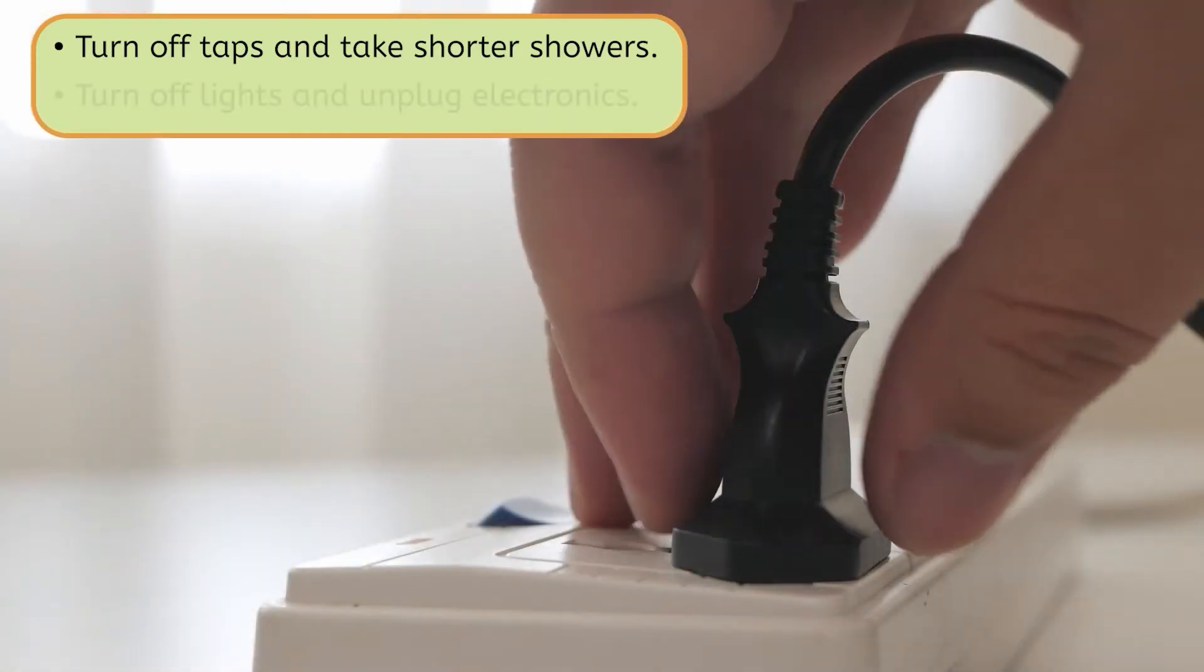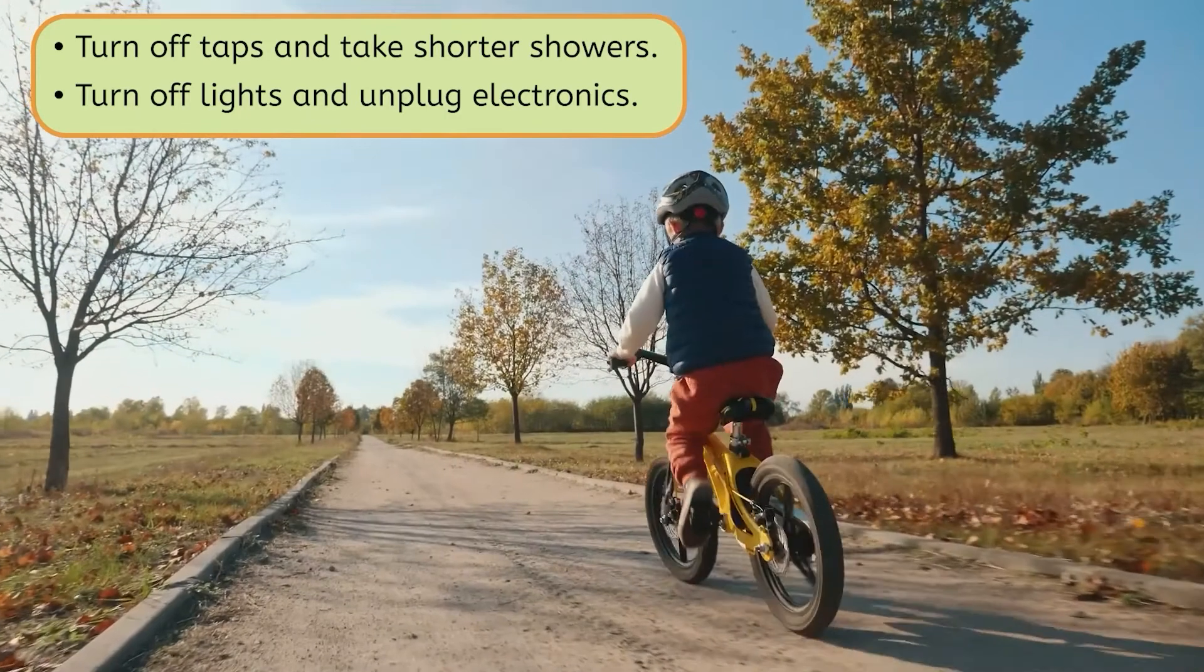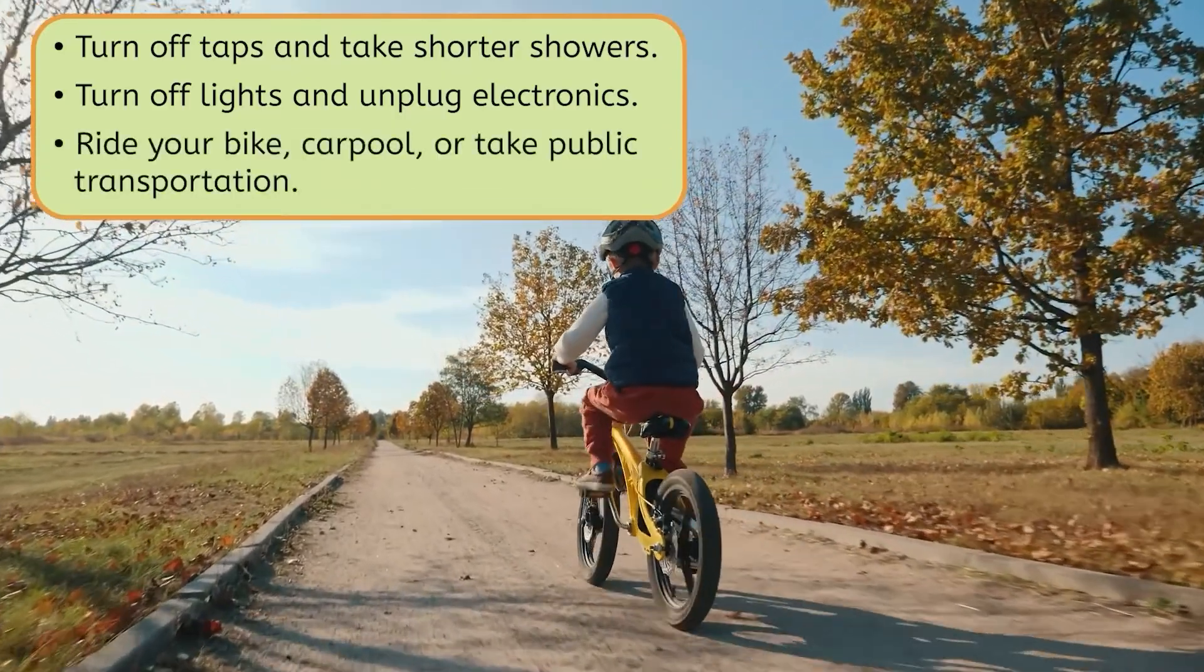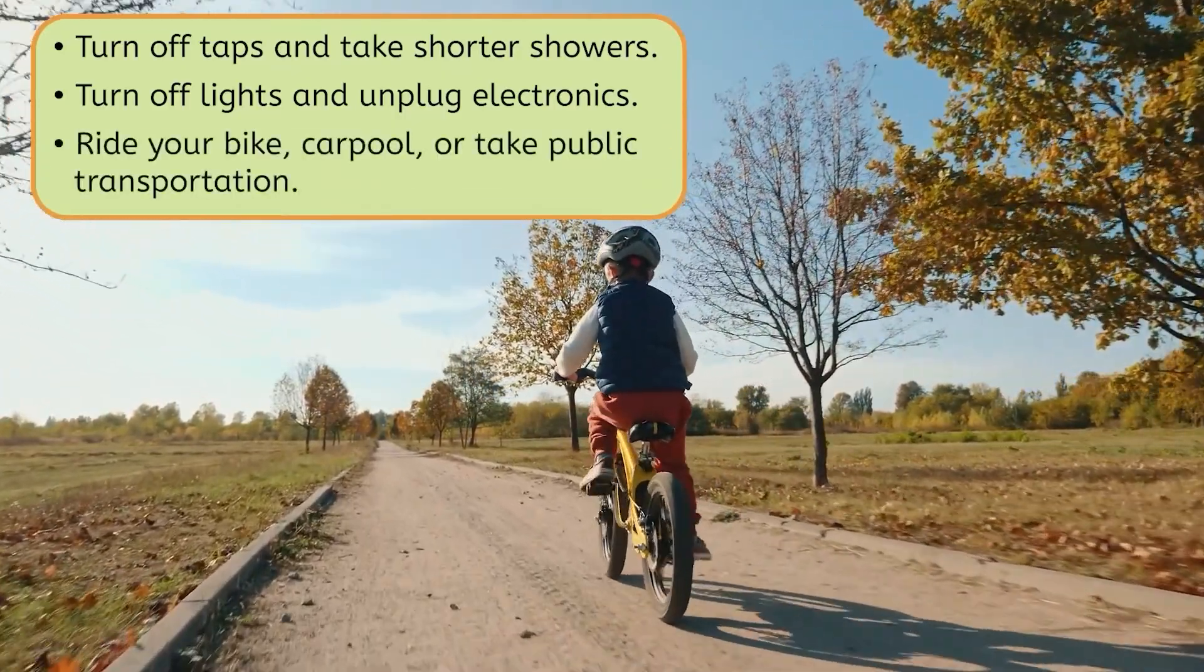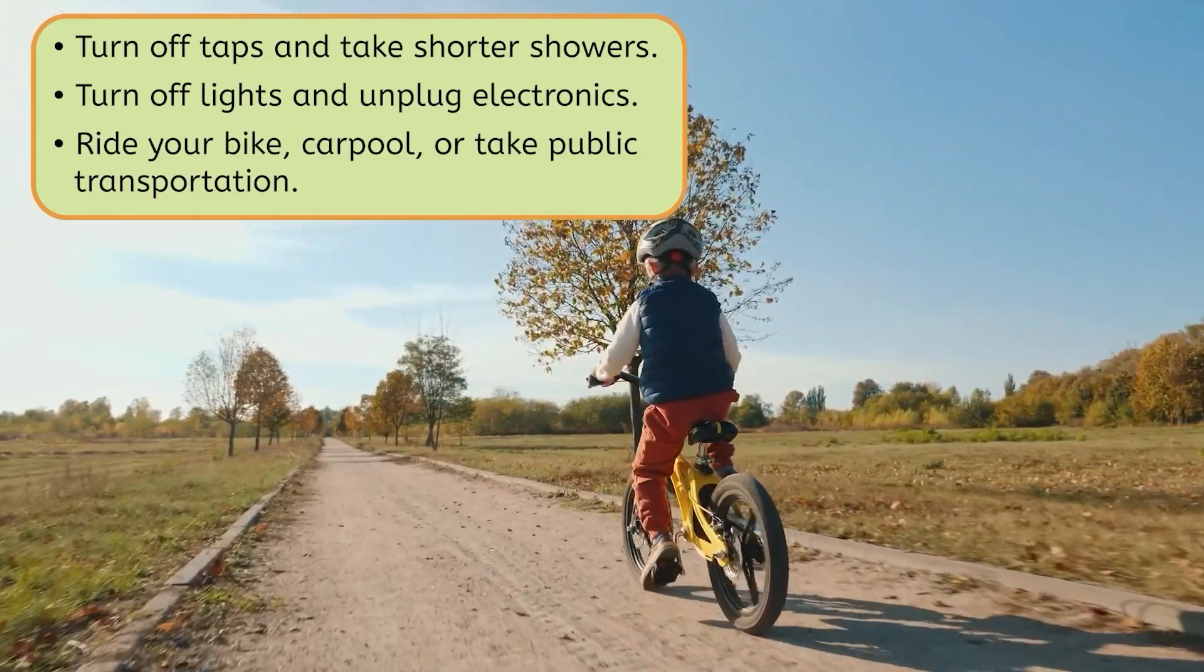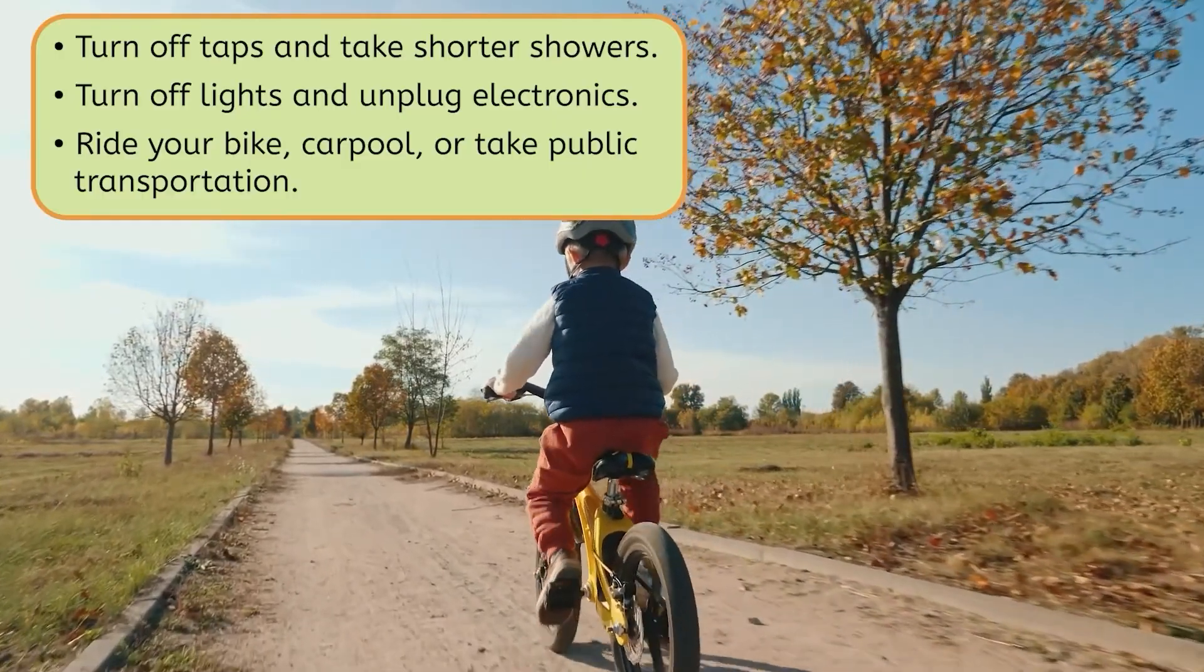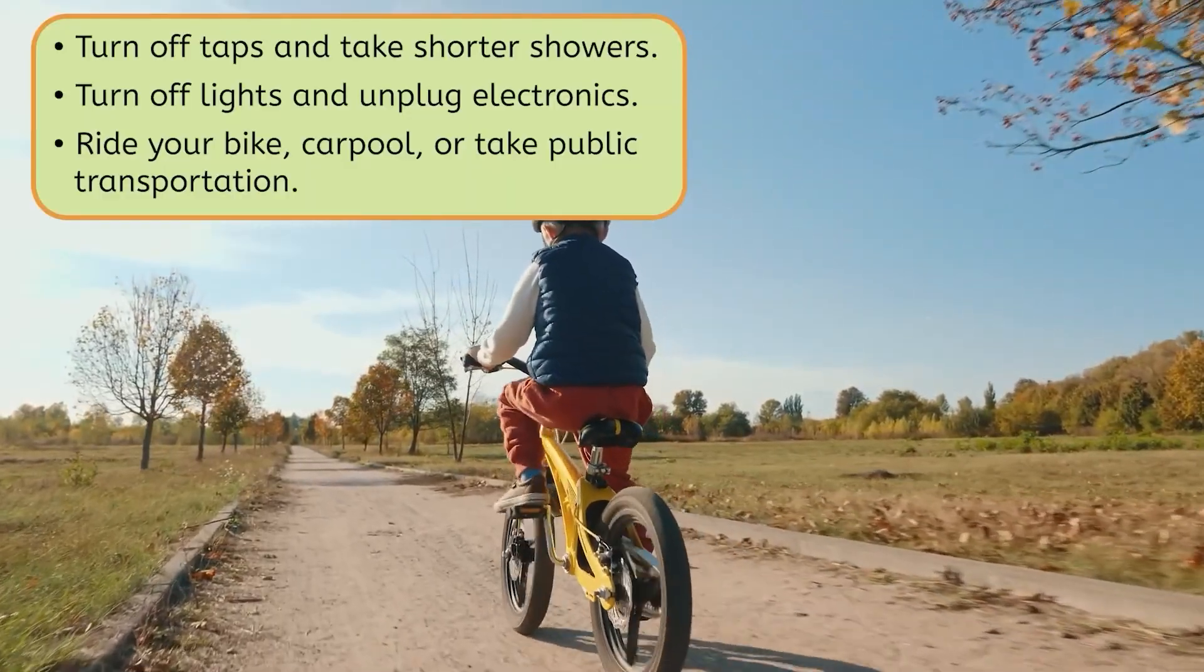We can conserve electricity by turning off the lights when you leave a room and unplugging electronics when they're not in use. You'd be surprised how much electricity is wasted on things that are plugged in but not being used. Just like I did today, you can choose to ride your bike or walk instead of taking a car, especially for short trips. For longer distances, try carpooling or taking public transportation like buses and trains. These choices conserve gasoline, a non-renewable resource, and reduce air pollution by putting fewer cars on the road. What other ways can you think of to conserve resources? Pause the video here and record your thoughts in your guided notes.